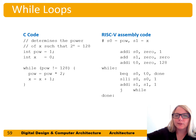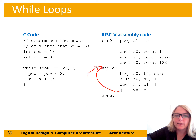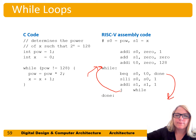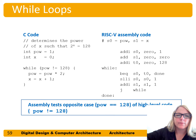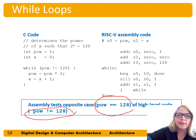Here it is written more nicely. The label names used are 'while' to jump back and repeat the loop, and 'done' to exit. Again, the high-level code tests the opposite case compared to the assembly code.